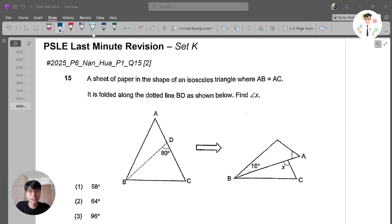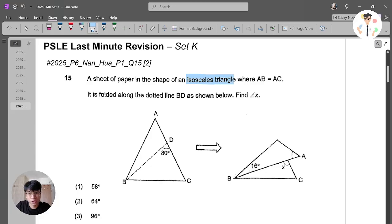This question says that a sheet of paper in the shape of an isosceles triangle where AB is equal to AC. This length and this length are actually the same. It is folded along the dotted line BD as shown below. Find angle X.